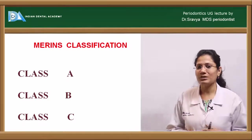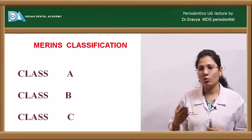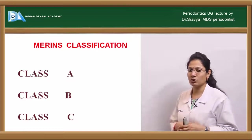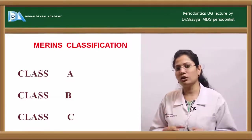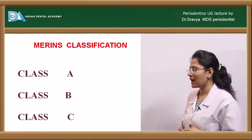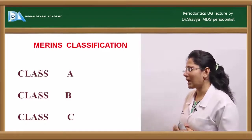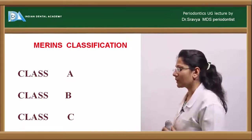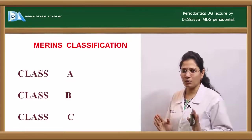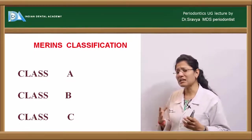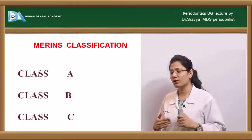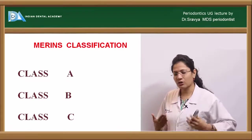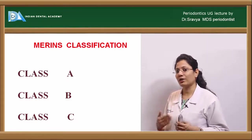This is Merrin's classification, which Merrin developed to determine the recall intervals for individual patients, as these differ from person to person. Class A patients are those who have achieved excellent results and maintained their dentition for about one year or more. Class B patients have generally good results, maintained reasonably well for one year or more. Class C patients have generally poor results even after periodontal therapy and have several negative factors causing recurrence of disease.